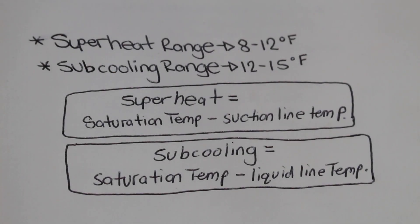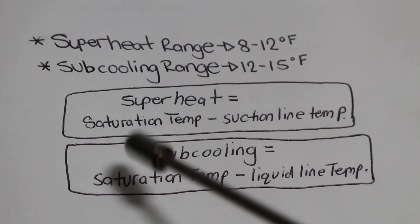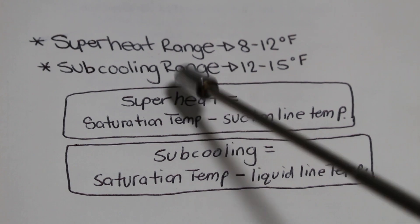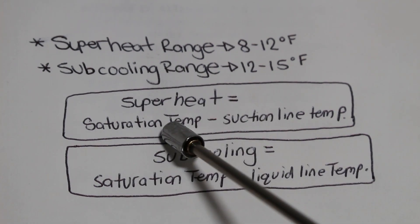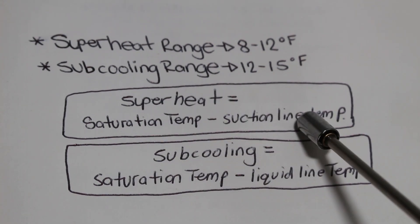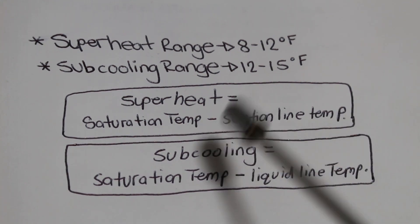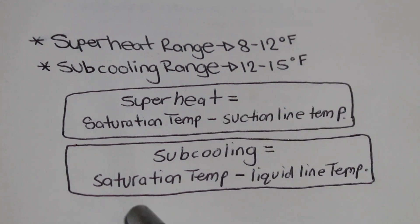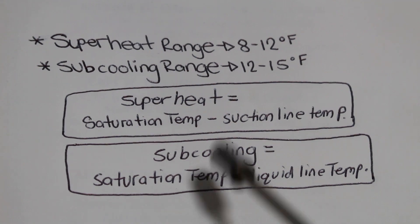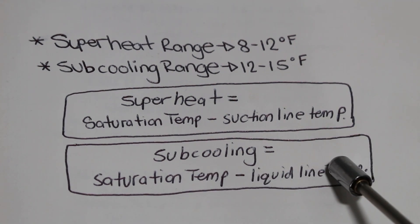Here's a little something for everyone to sum things up. So your superheat is going to be the difference between your saturation temperature and your suction line temperature. And for subcooling, your subcooling is going to be the difference between your saturation temperature and your liquid line temperature.